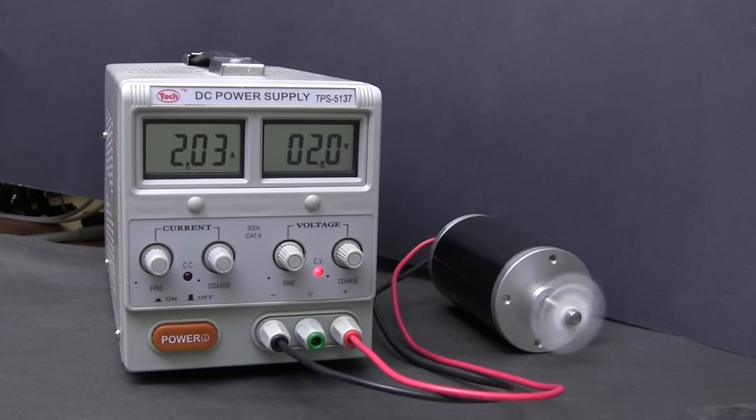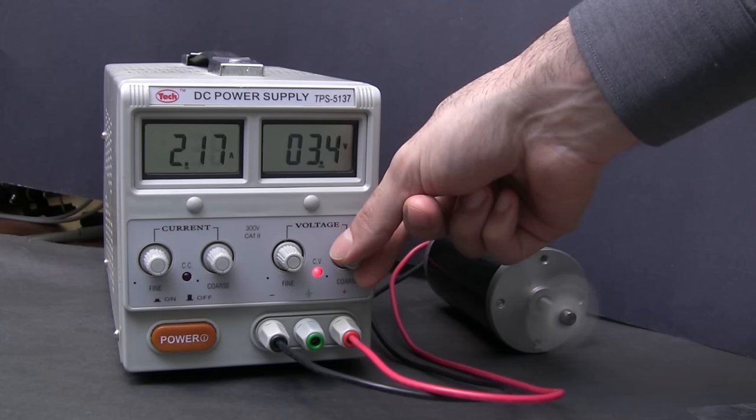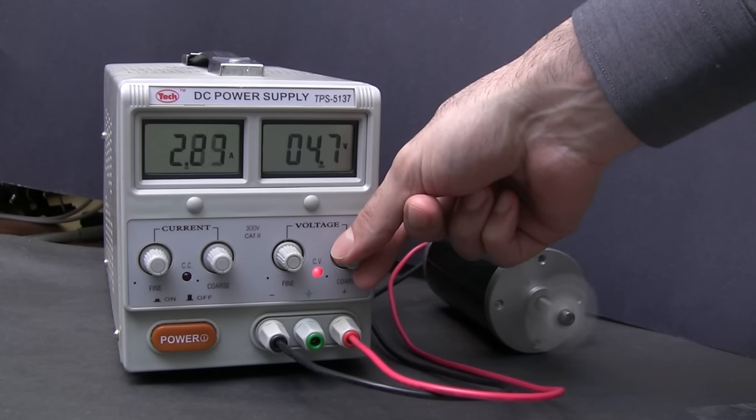Now let's increase the voltage to 2 volts. Now that we have a bigger pushing force, more current is flowing, 2 amps. So more energy is flowing through the motor, so obviously it's going to turn faster. And the more I crank up the voltage, we get even more current and the motor speeds up.